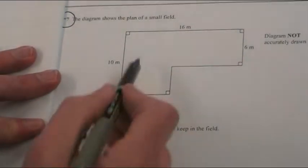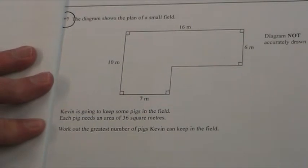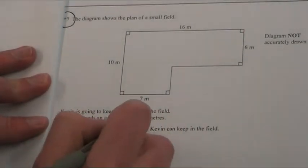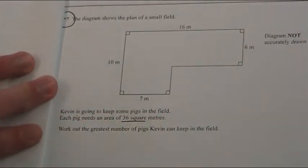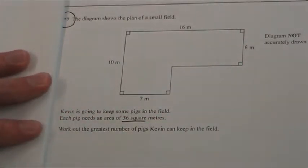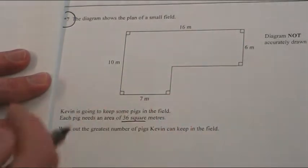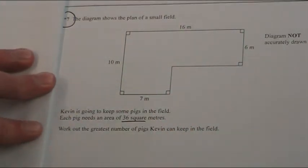We have a rectangular field. We need to work out how many pigs this farmer can keep in there, and we're told the pigs need an area of 36 square meters. There is no magic formula for an L-shape, but you should be able to see this L-shape is made up of rectangles or squares stuck together.